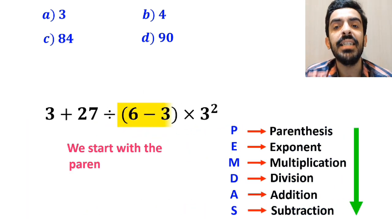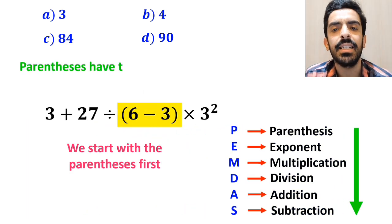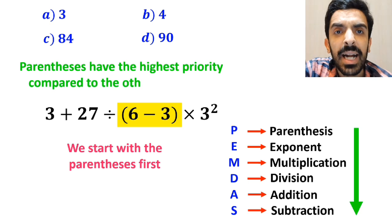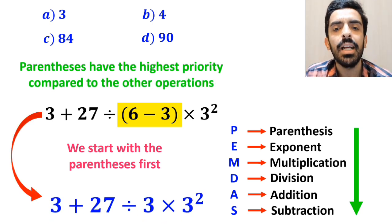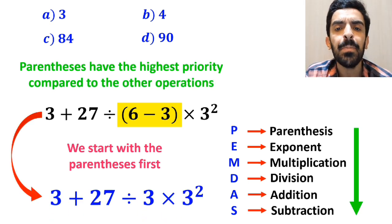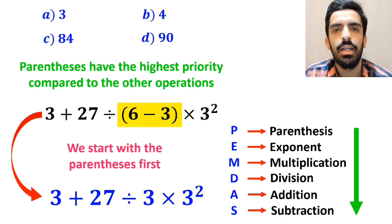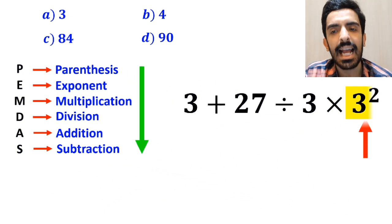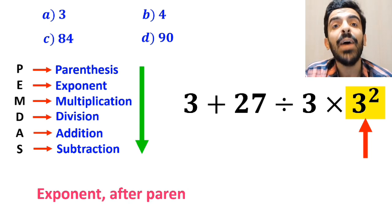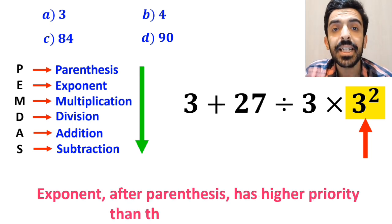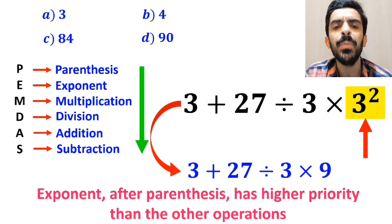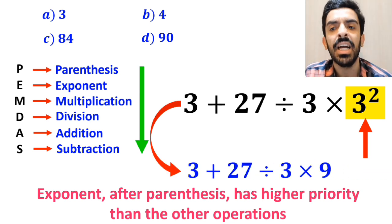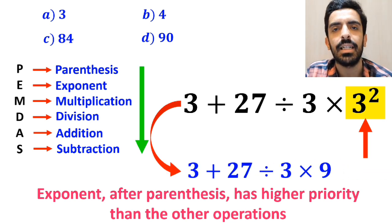So we'll start with the parentheses first, because parentheses have the highest priority compared to the other operations. Instead of the original expression, we can write 3 plus 27 divided by 3 times 3 to the power of 2. In the next step, we go to the exponent, because after parentheses, exponents have higher priority than the other operations. So this expression simplifies to 3 plus 27 divided by 3 times 9.